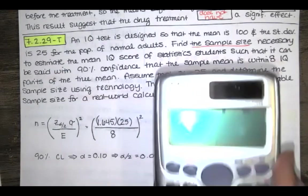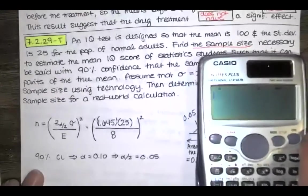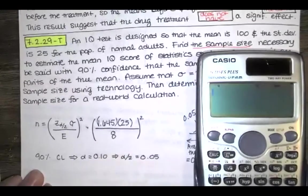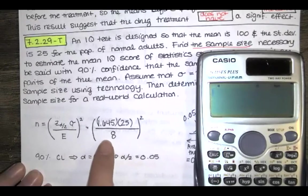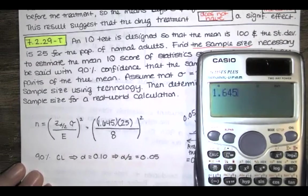We'll have to round up to the nearest whole number to make sure that our error is eight IQ points or less. It's okay if our error is smaller, we just don't want our error to be larger. So we'll take 1.645, multiply by 25, divide by eight, and square it, and we get 26.4.